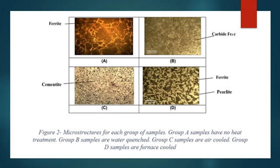This image shows the resulting microstructures of the steel samples after cooling. Sample A shows the microstructure of Steel 39 before any heat treatment. Sample B shows the microstructures after being water quenched. Sample C is air cooled, and Sample D is furnace cooled.